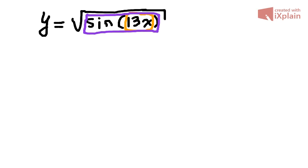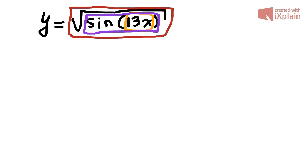In this case there is another layer outside, which is the square root of the whole expression. So to differentiate this we would need to differentiate the red one (the root), the purple one (the sine), and the orange one (the linear).